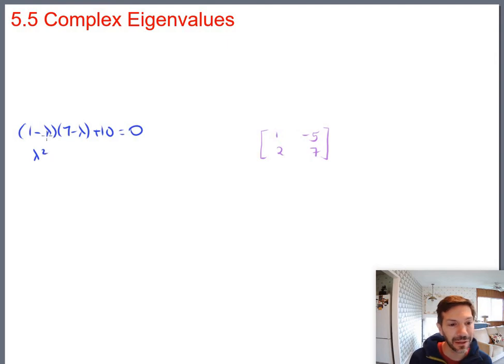And let's see, multiplying things out. Lambda squared, minus 7 lambda, so minus 8 lambda, plus 7, plus 10, plus 17. And you're like, okay, great. This is already not looking so good for factoring. And it's definitely not good for factoring.